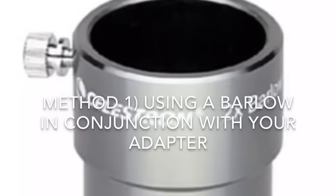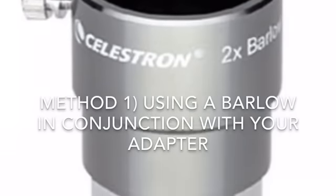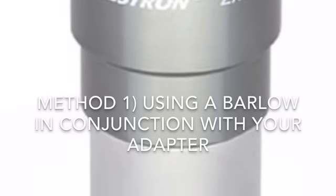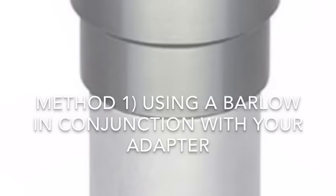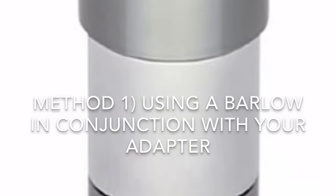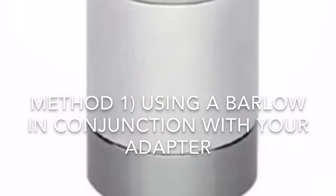So that brings us to method number one, the most common and the easiest of all four methods, and that's by employing a Barlow in your system. If you're not familiar with what a Barlow is, it's an optical device that effectively doubles your focal length. In some cases they make them in x3, x4, and up.